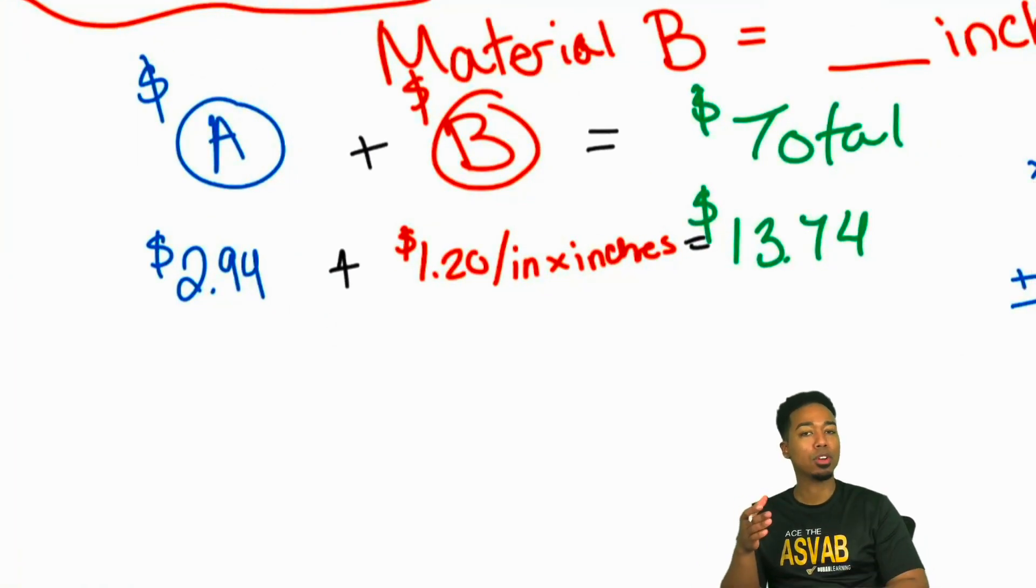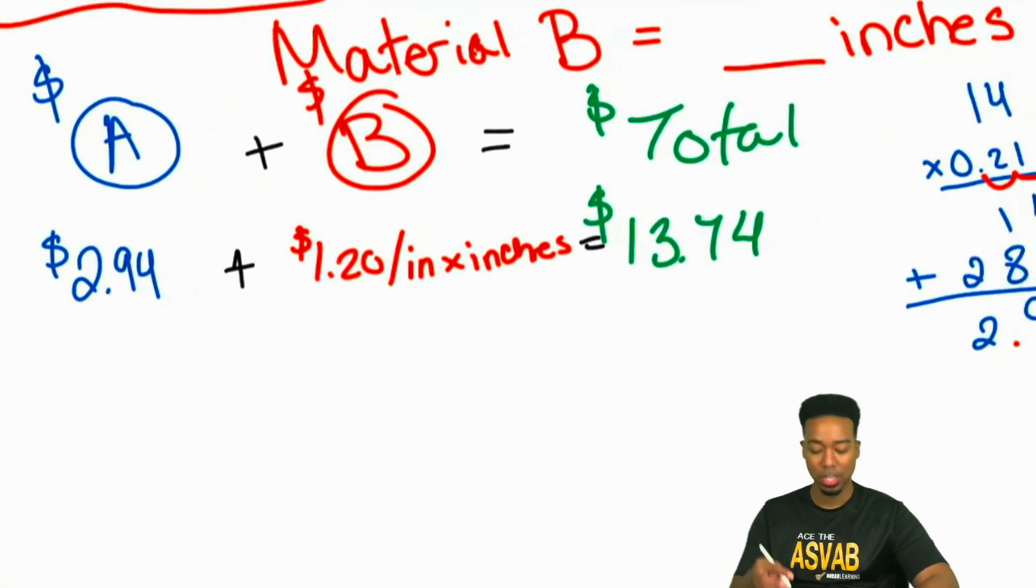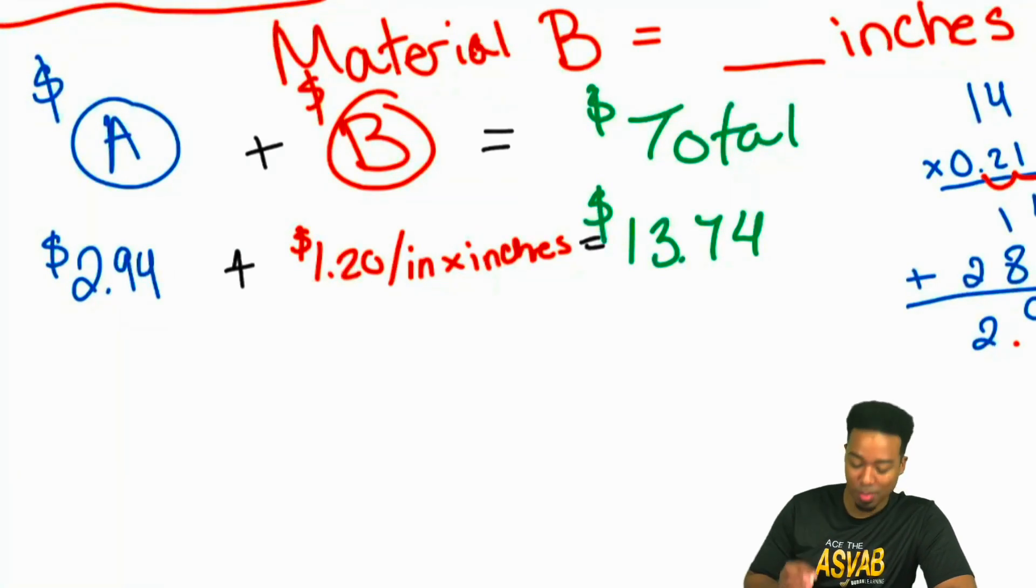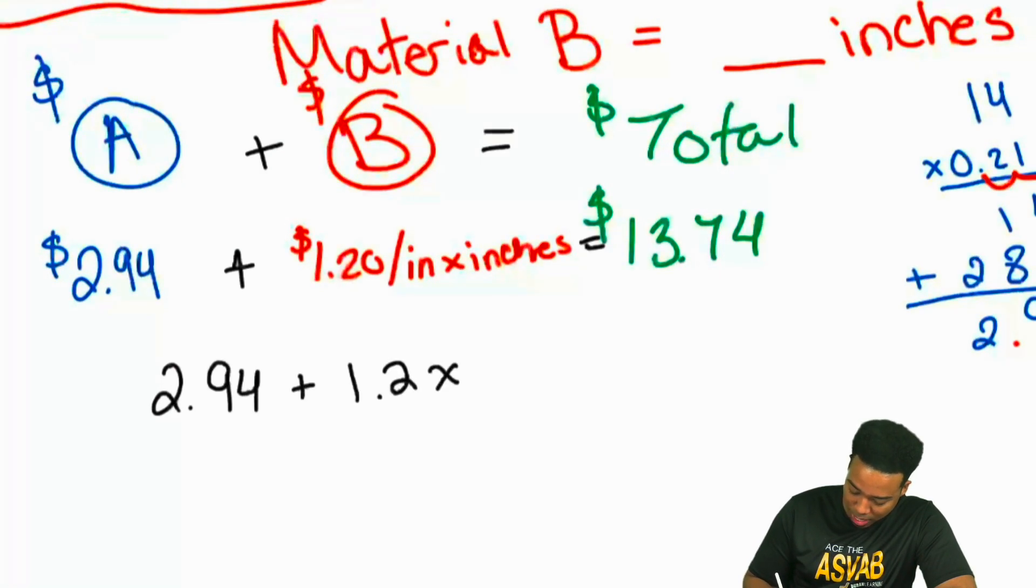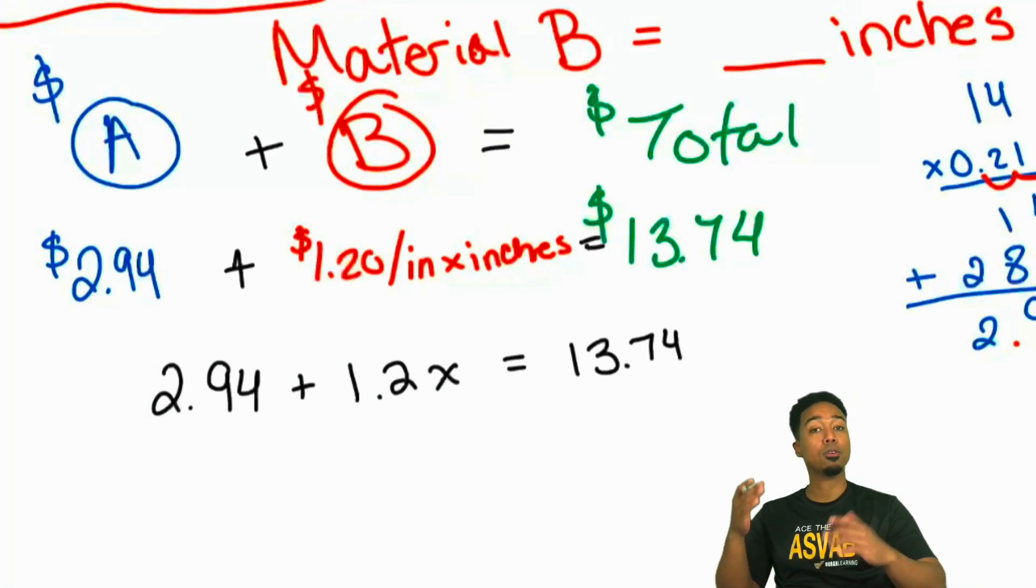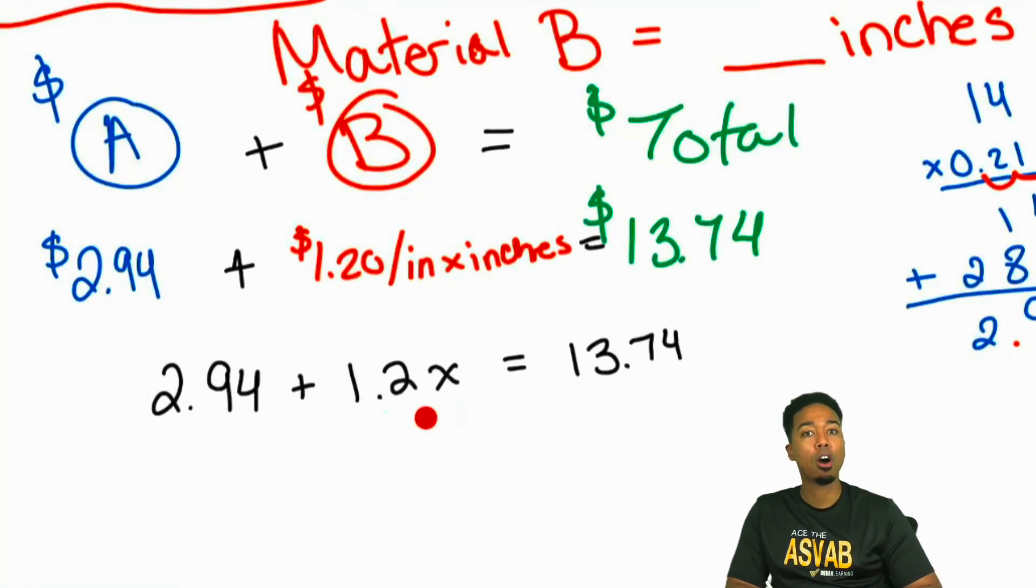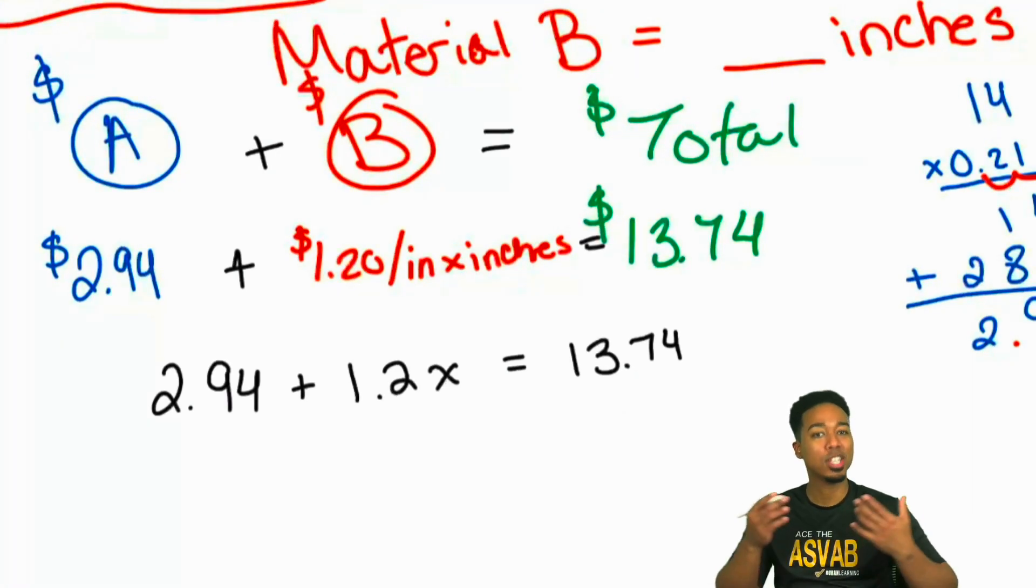So what we can say is material B right over here, material B is 1.20 per inch. So we can say 1.20 per inch times the number of inches. Now I don't know what that's going to be, what the number of inches is, but I know that that's how I'm going to get it done. So how do I figure this out? Treat this like an equation. I'm going to rewrite this. We have 2.94 plus 1.2 times X equals 13.74. This is the pure math way of looking at it. What you're saying is the cost of material A plus the cost of material B equals the total cost.